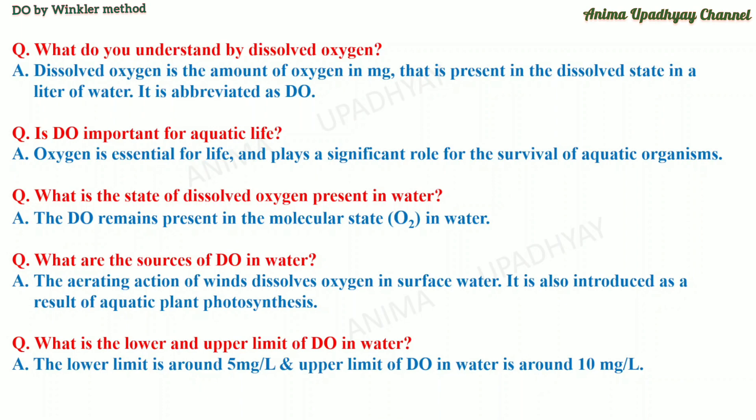What are the sources of D-O in water? The aerating action of winds dissolves oxygen in surface water. It is also introduced as a result of aquatic plant photosynthesis. What is the lower and upper limit of D-O in water? The lower limit is around 5 mg/L and the upper limit is around 10 to 10.5 mg/L of dissolved oxygen in water.